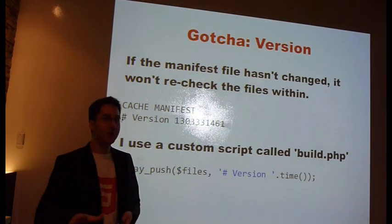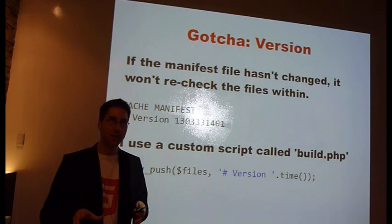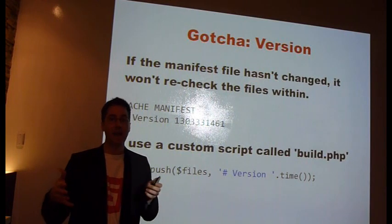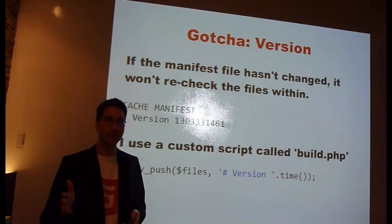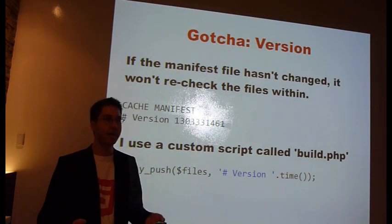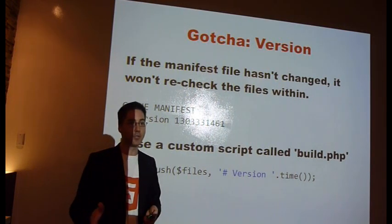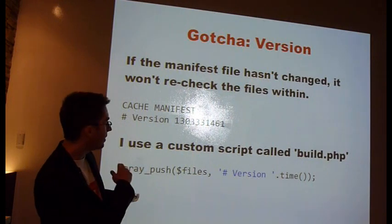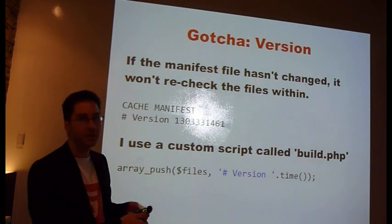Even if you make sure that your cache manifest file is not cached, problem number two is that if the cache manifest file doesn't change — even if it reloads and gets a new version, but it looks at it and says 'oh hey, this is actually the same' — it won't reload any of the files listed in the cache manifest file. Very problematic if you update a JavaScript or CSS file. So you actually have to make some kind of change in the cache manifest file. What I've done is create a version via a PHP file that builds my manifest file and updates it with a timestamp, so it will always be different each time.